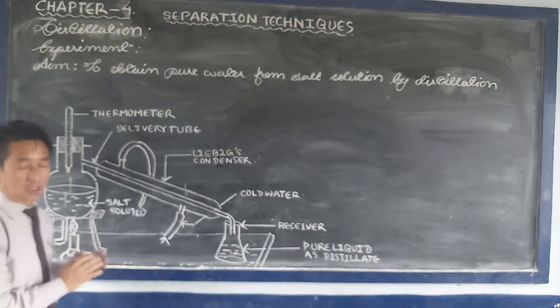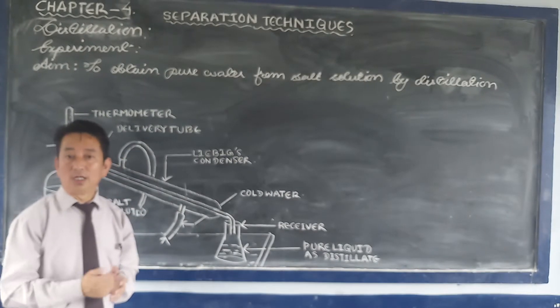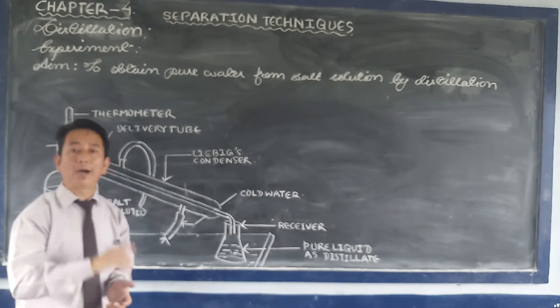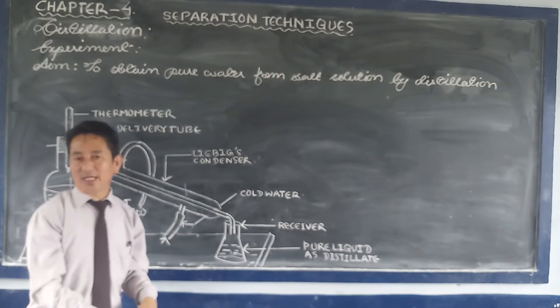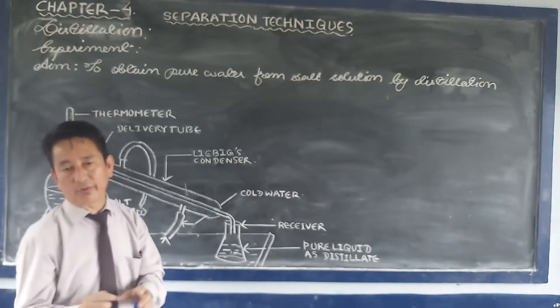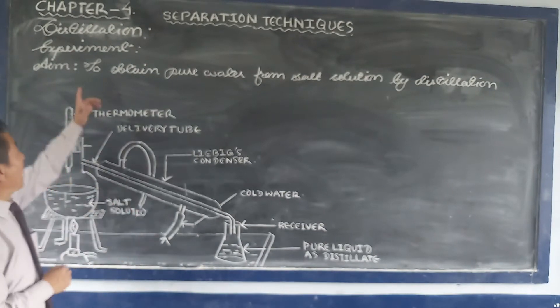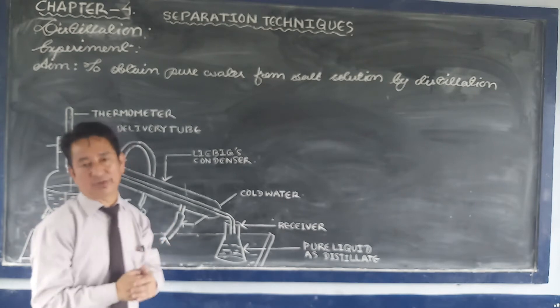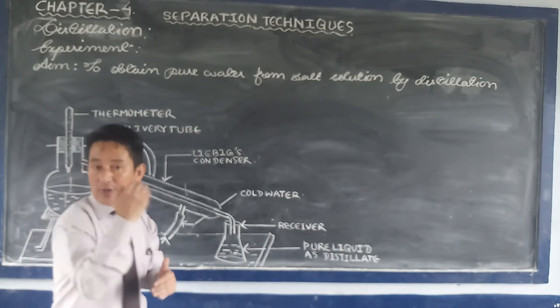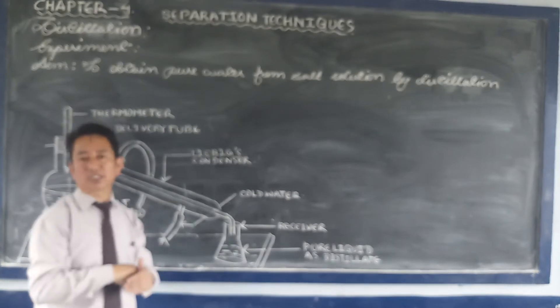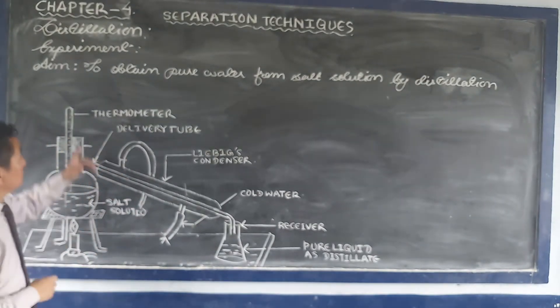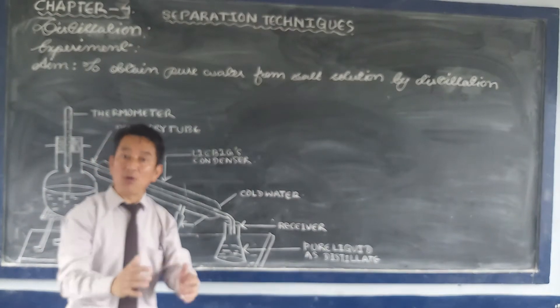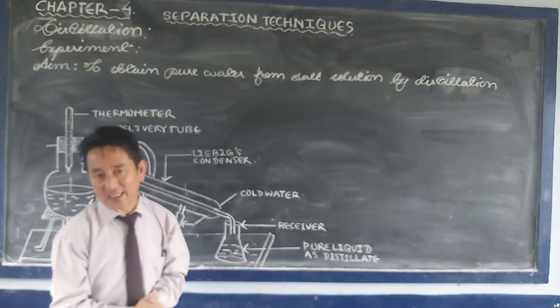First, we have distillation. What is distillation? The process of converting liquid into its vapor state by heating, and then condensing or cooling the vapor into a pure liquid state, is known as distillation. This means distillation is a change of state from liquid to vapor and back to liquid state by condensing the vapor. This method is employed for the separation of pure liquid from non-volatile impurities.